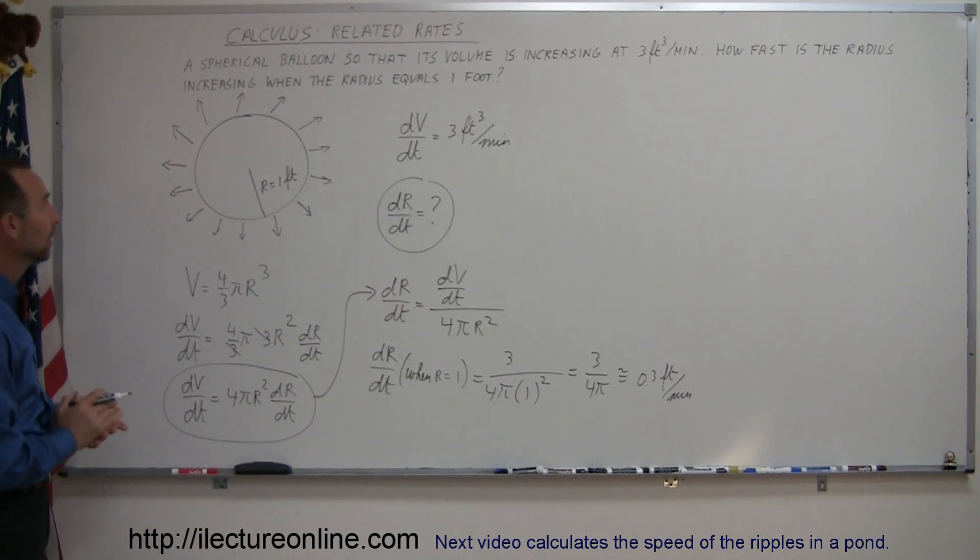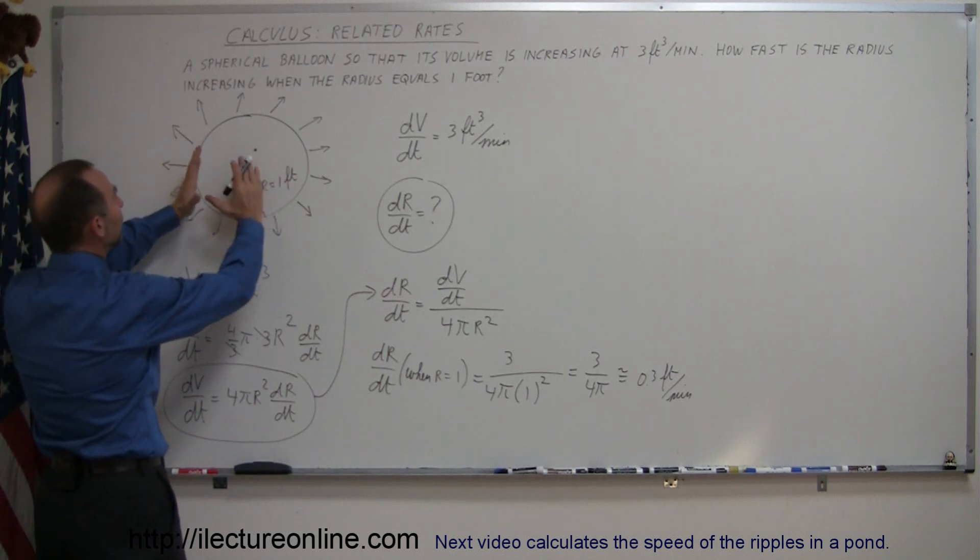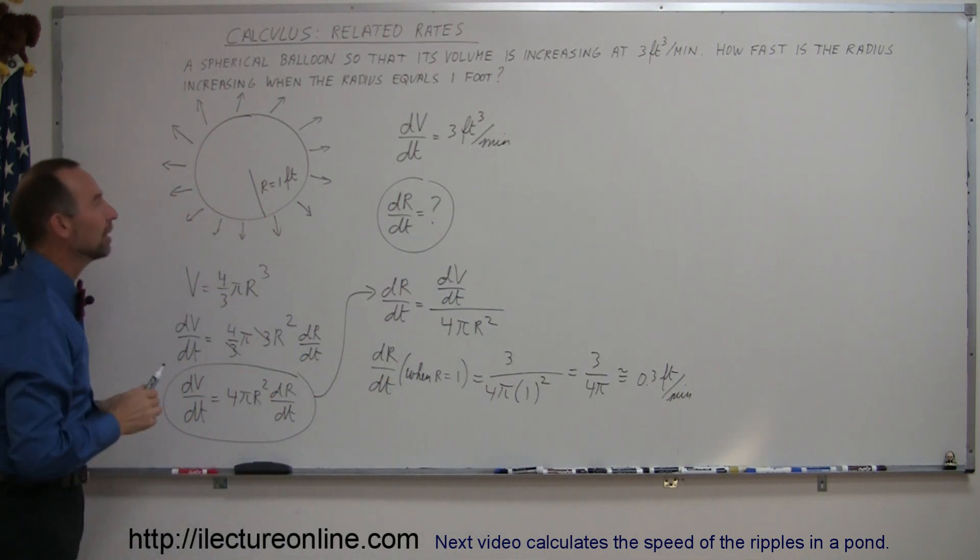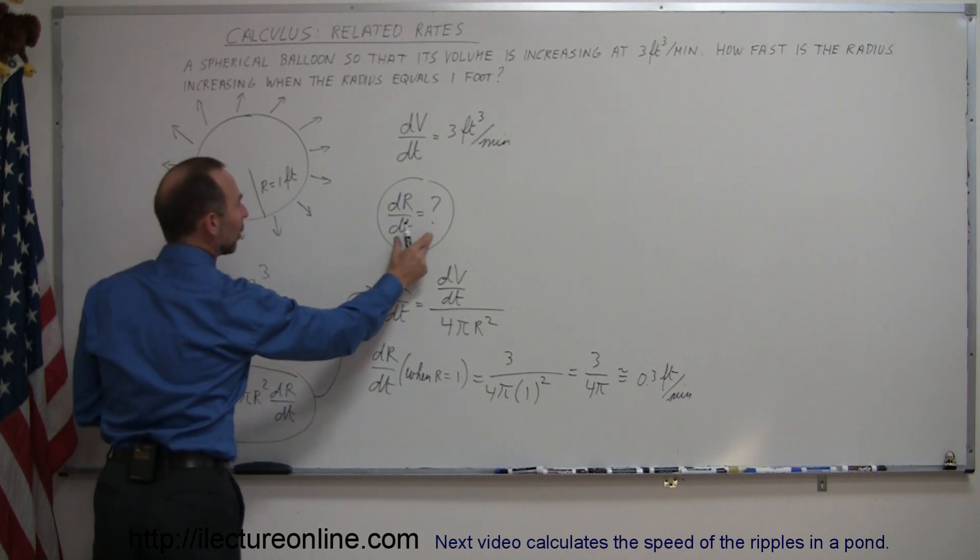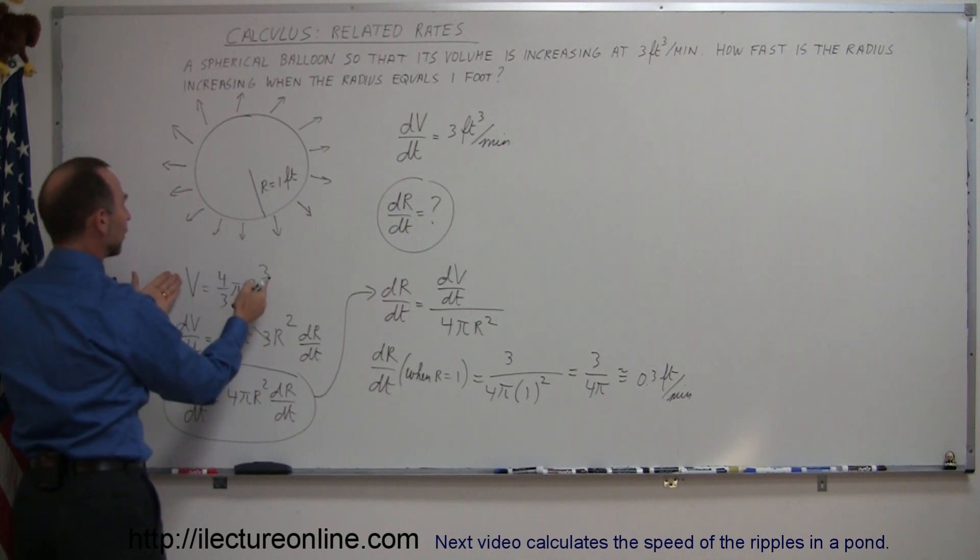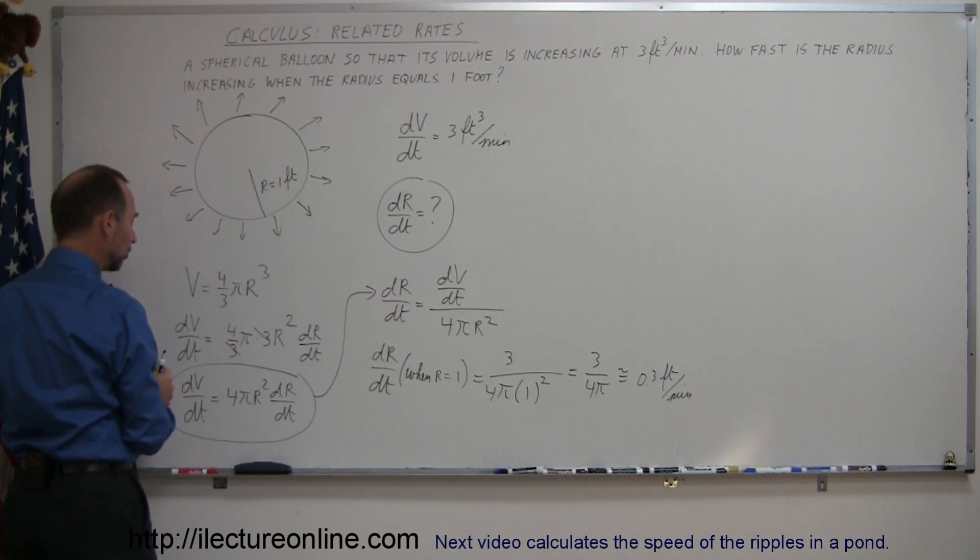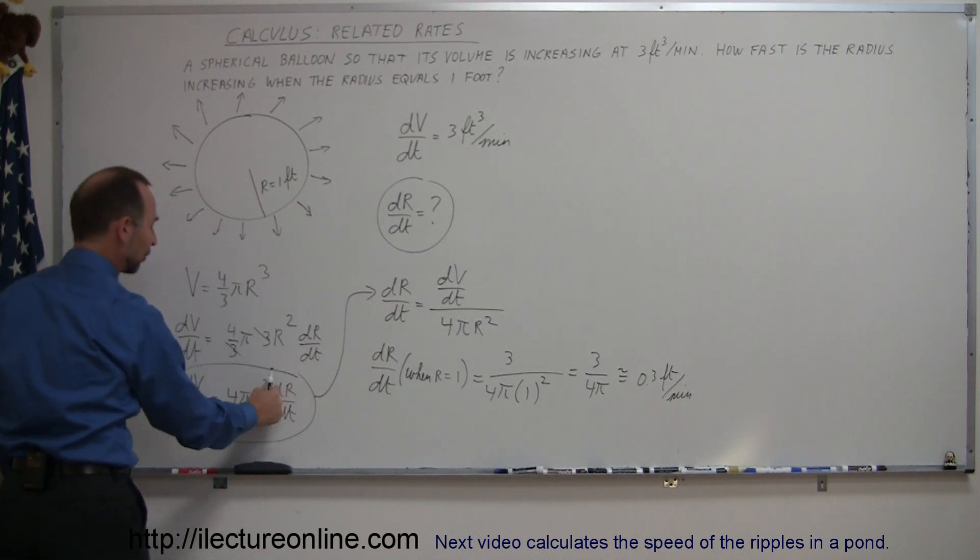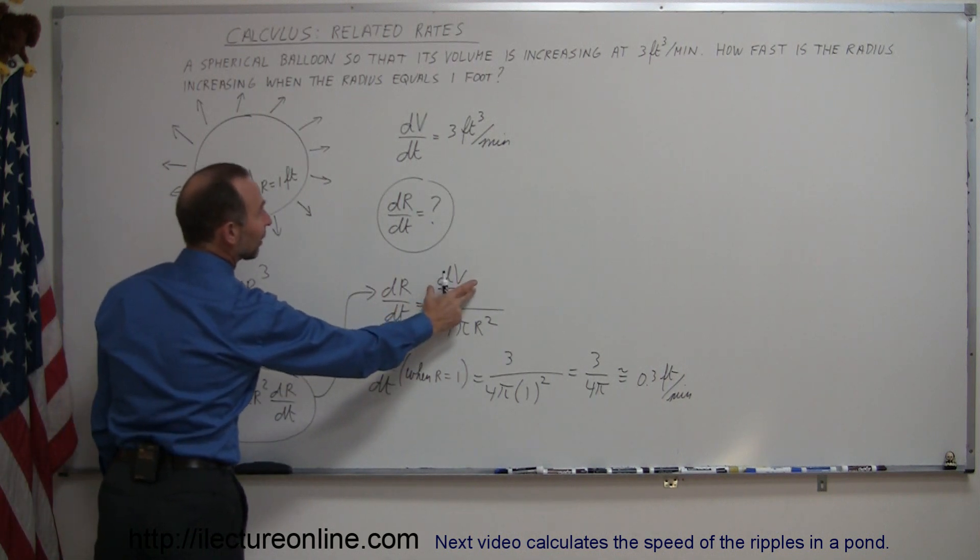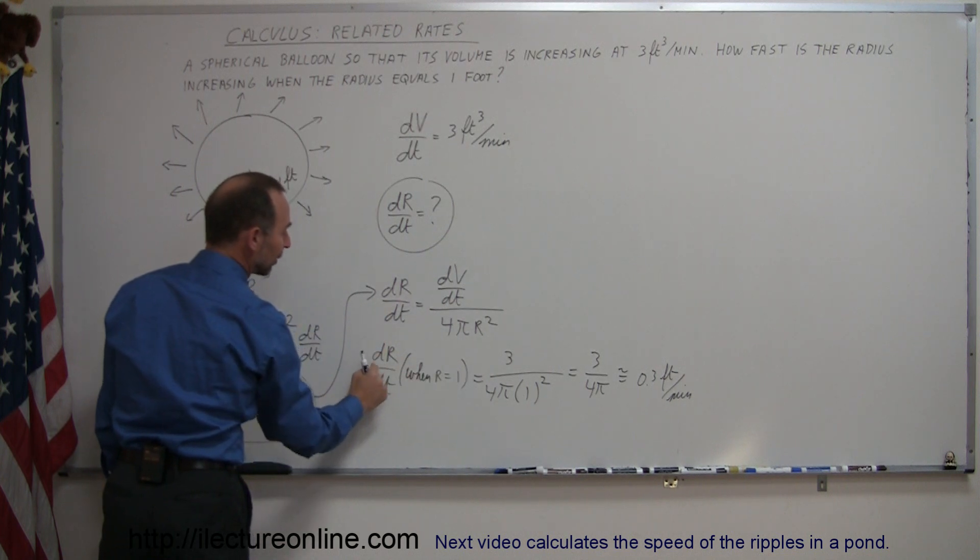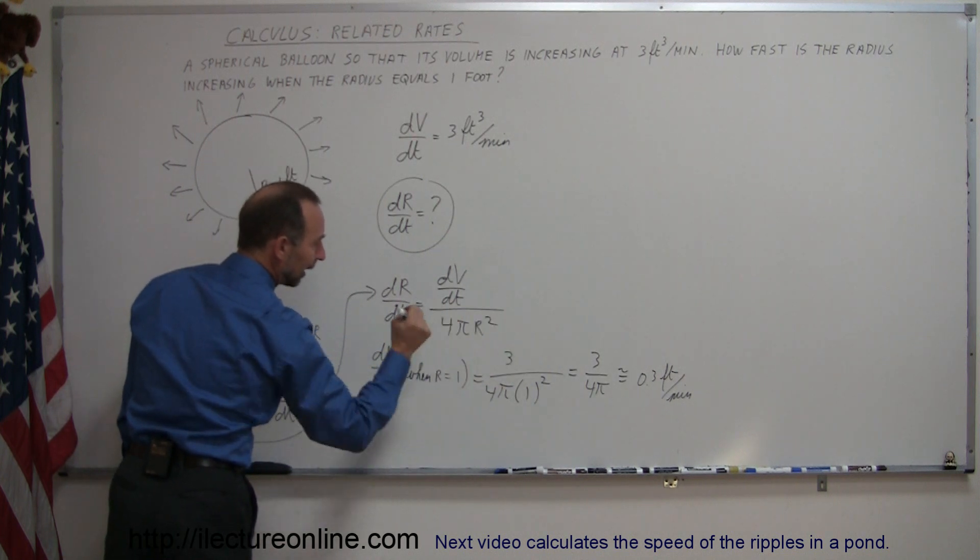So again, to recap real quickly, we have a spherical balloon that's being inflated, and they give us the constant volume change per unit time, or dV/dt is 3 cubic feet per minute, and they want us to find out how fast the radius is changing. So we come up with an equation that relates the volume to the radius, then we take the derivative with respect to time of both sides of the equation, so we end up with a dV/dt and we end up with a dr/dt. We can solve that equation for dr/dt, like that, then we plug in the value for dV/dt that was given, we plug in the value for r that was given, so we can find dr/dt when r equal to 1, and there's the answer.